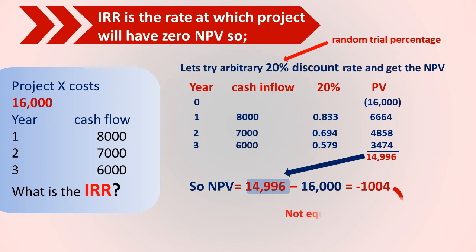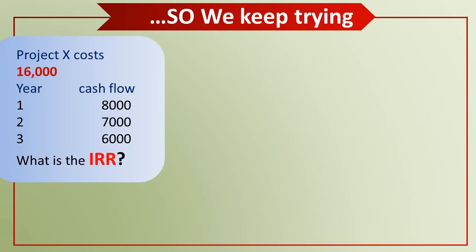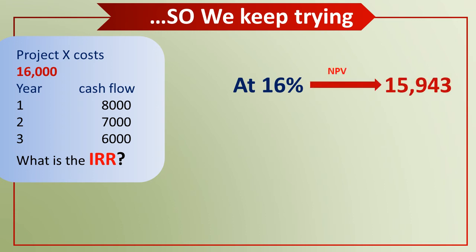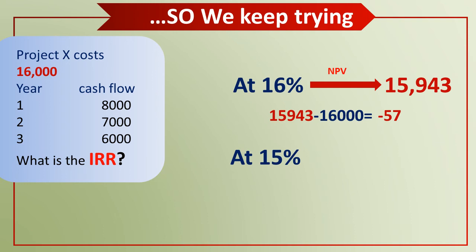That means it's not equal to zero. A negative $1,004 NPV at 20% shows that the project's rate of return is lower than 20%, so we try a lower discount rate of 16%. At 16%, the net present value of the cash flows is $15,943, giving us an NPV of negative $57. So we try an even lower number — 15% — and that gives us a present value of $16,200.